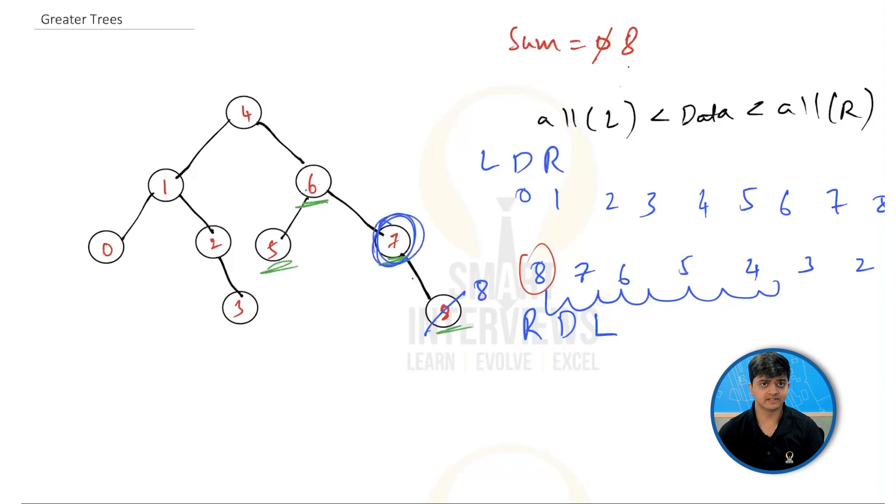Then, I'll go to the next element, which will be this 7. Now, I'm going to add 7 to my sum, which will make it 15, and I'm going to replace 7 with 15. Then, my next element is 6. I'm going to add 6, which will make it 21, and then I'm going to replace this 6 with 21.